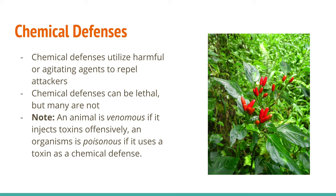Chemical defenses are chemicals that are either harmful or agitating to other organisms. Some of them are lethal; many are not. A lot of people think chili peppers evolved capsaicin as a defense against being eaten because they taste hot — but we're not so sure about that. We think it has more to do with defending against insects and funguses than against mammals, because obviously we quite like it, which is why we keep breeding peppers with way more capsaicin than they need, like the Carolina Reaper.